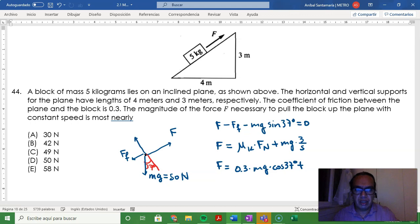Now 50 times 3/5 is approximately 30 newtons, and so we have 0.3 times 50 times 4/5 plus 30, which equals 40 times 0.3 which is 12 newtons plus 30 newtons.